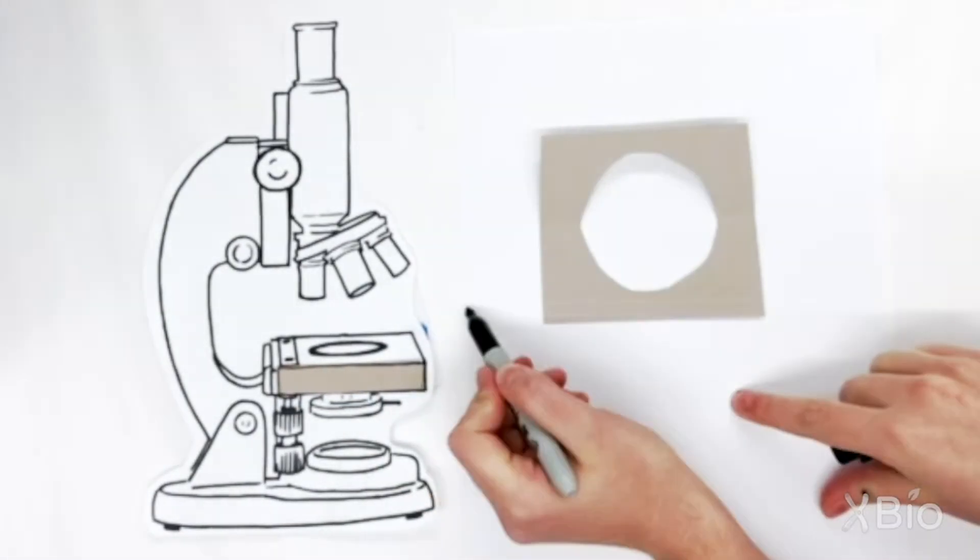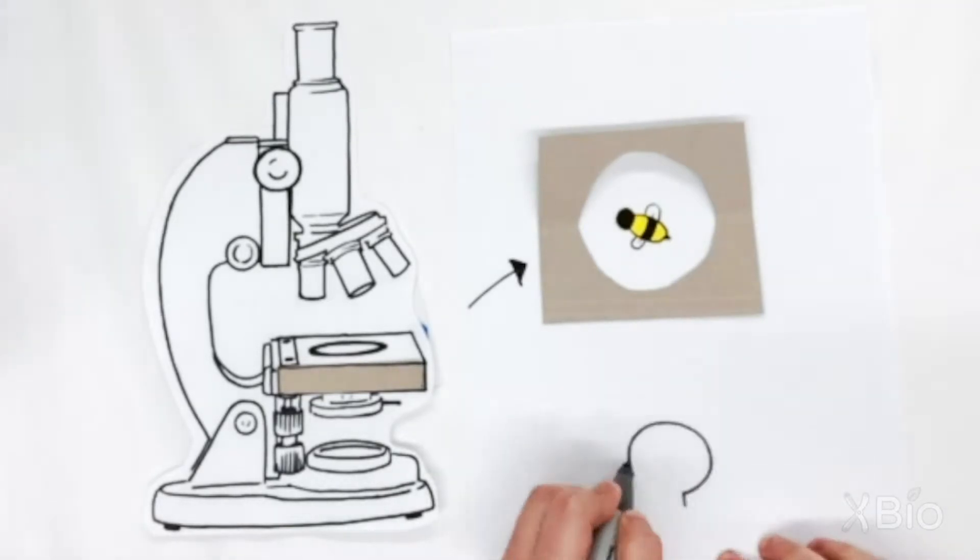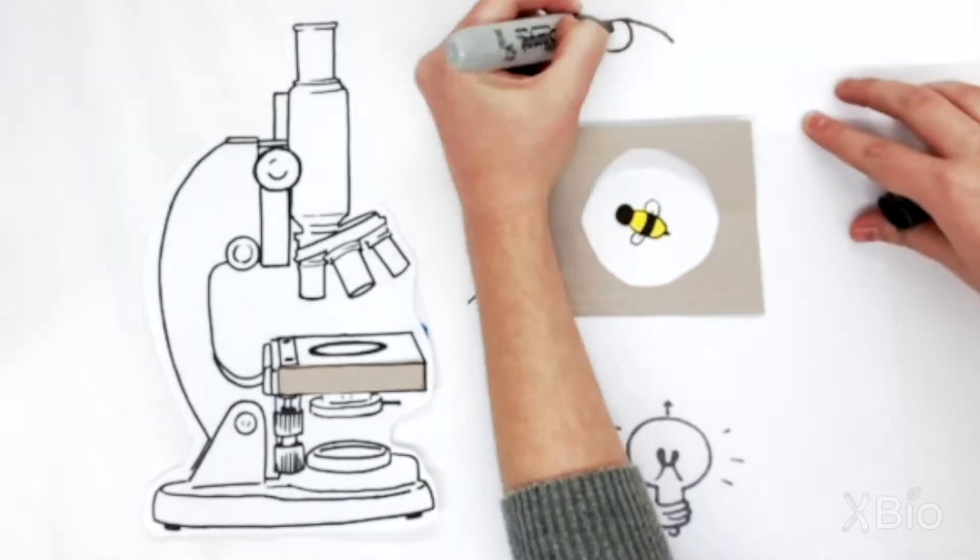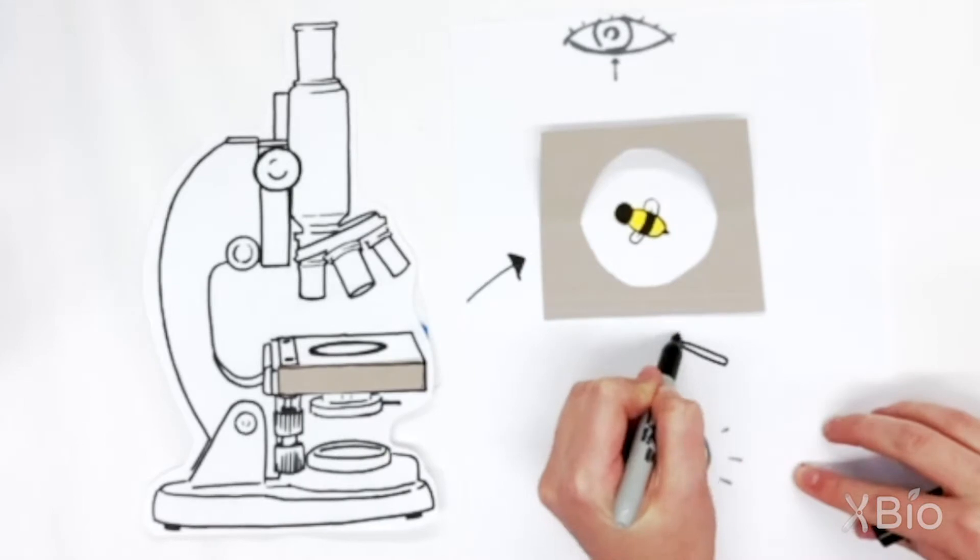You've got your sample on a stage, a bumblebee in this case. And a lamp sends white light up through the stage to your eye, with some lenses for magnification in between.